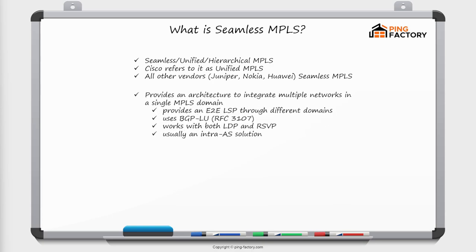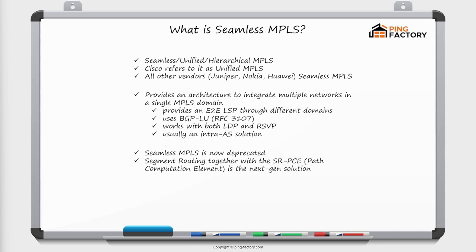Seamless MPLS is not a protocol by itself. It provides an architecture to integrate multiple networks, multiple domains, into a single MPLS domain, providing an end-to-end LSP to different PEs in different domains. It uses BGP LU (see the RFC number referenced), and it can work with both LDP and RSVP. It's usually used as an intra-AS solution. Note that this architecture is now deprecated — for greenfield deployments, you should use segment routing together with SR-PCE, the path computation element, to establish end-to-end LSPs.